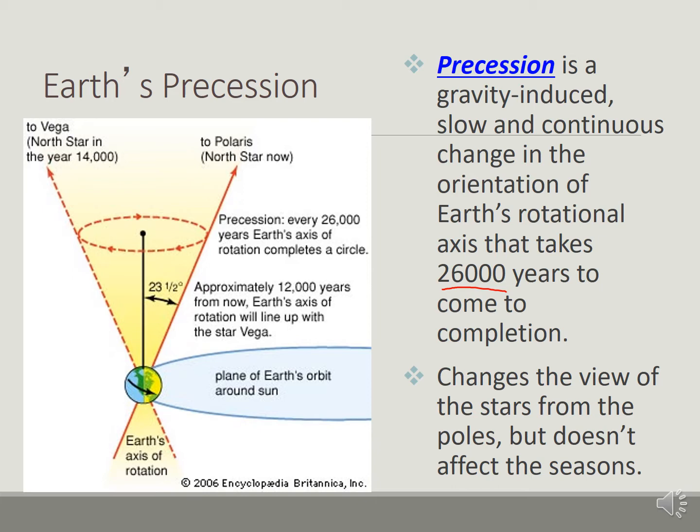This right here, 26,000 years of Earth's axis of rotation completes a circle. Where we're at right here, as you see, the North Star now is here and it says Vega, the North Star in the year 14,000. So approximately 12,000 years from now, the Earth's axis rotation will line up with Vega.